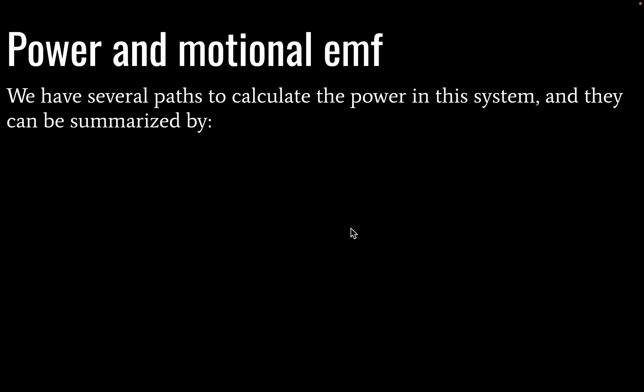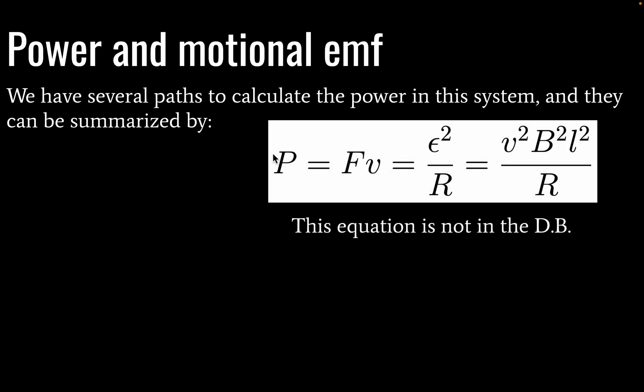We have several paths that calculate the power in this system and they can be summarized by this series of equations. We've seen this before in topic five. Here we have then EMF squared divided by resistance. We can derive this using Ohm's law. We've also done that in topic five.